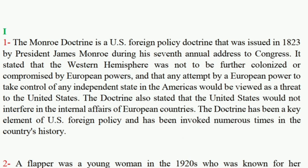The Monroe Doctrine is a U.S. foreign policy doctrine that was issued in 1823 by President James Monroe during his seventh annual address to Congress. It stated that the Western Hemisphere was not to be further colonized or compromised by European powers, and that any attempt by a European power to take control of any independent state in the Americas would be viewed as a threat to the United States. The doctrine also stated that the United States would not interfere in the internal affairs of European countries, and has been a key element of U.S. foreign policy, invoked numerous times in the country's history.